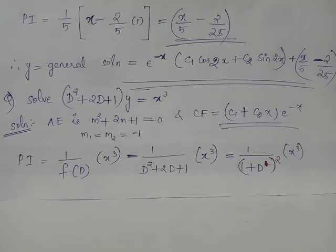When the denominator (1 + D)² is taken to the numerator it becomes (1 + D)² the whole inverse, that is PI equals (1 + D) raised to minus 2 acting on x³, where (1 + D) raised to minus 2 has to be expanded using the binomial theorem.